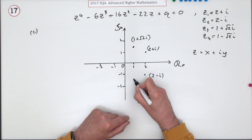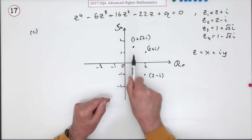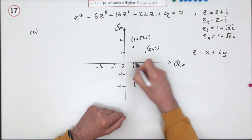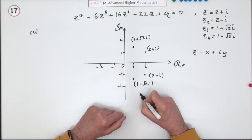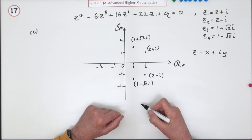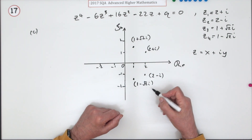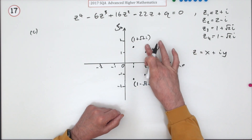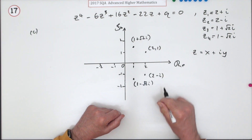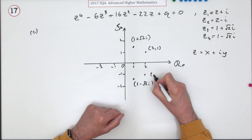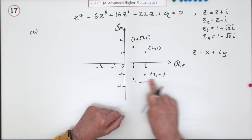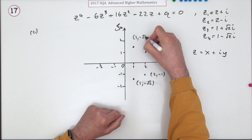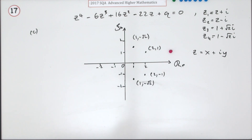The marking scheme is quite fussy about these being correctly placed and symmetrically positioned. Note that instead of labelling points as complex numbers like 2+i, you can just give coordinates: (2,1), (2,−1), (1,√2), (1,−√2). Either way, that's the last mark.